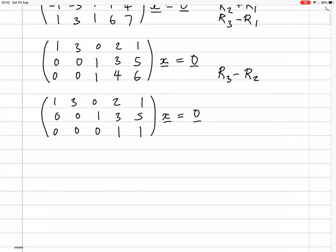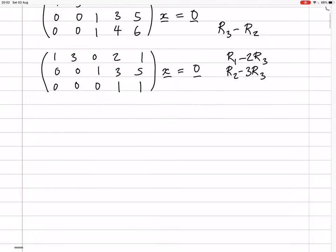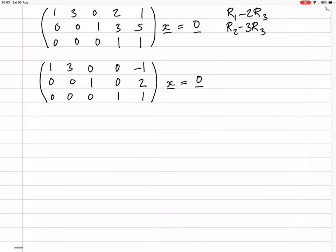Now we want zeros above that last pivot. We'll do row 2 minus 3 times row 3, and row 1 minus 2 times row 3. Row 3 stays the same. Row 2 becomes 0, 0, 1, 0, 2. Row 1 becomes 1, 3, 0, 0, minus 1. Now it's completely reduced, so we can read off the solutions.